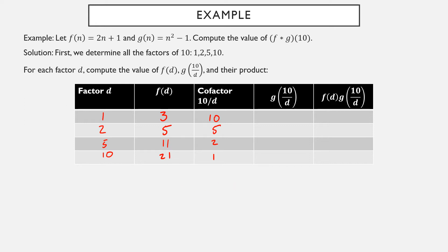For each of these cofactors, we compute g of that. So g of the cofactor will be that number squared minus 1. So 10 squared minus 1 is 99, 5 squared minus 1 is 24, 2 squared minus 1 is 3, and 1 squared minus 1 is 0. Next what we're going to do is we're going to take the product elements of this column with elements of that one. So f(d) times g(10/d), 3 times 99 is 297, 5 times 24 is 120, 11 times 3 is 33, and 21 times 0 is 0.